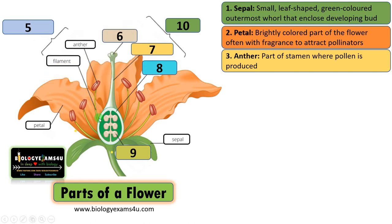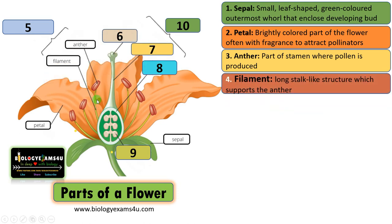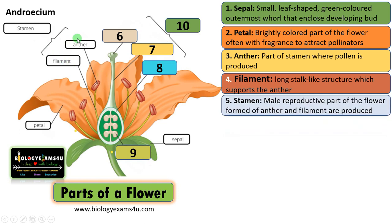This is called the filament. It is the long stalk-like structure that supports the anther. This anther and filament together form the stamen, the male reproductive part of the flower. So the basic unit of androecium, or the third whorl, is called the stamen.